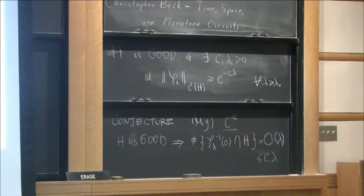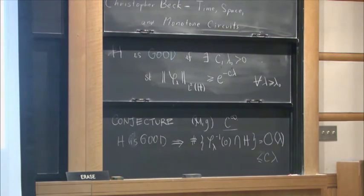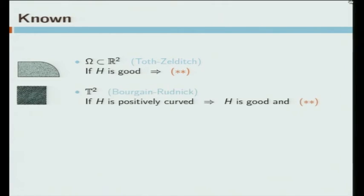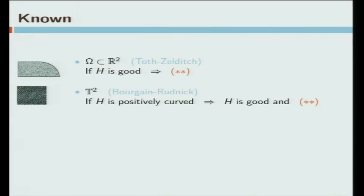I'm going to tell you what's known. Toth and Zelditch, who introduced the concept of a curve being good, were working on regions in the plane. In the plane, they were able to show that if the curve h is good, then you get this O of lambda bound. On the torus, Bourgain and Rudnick in 2010 proved that if you choose your starting curve h to have strictly positive curvature, then the curve h is going to be good and also this O of lambda bound is going to be satisfied. So these are two flat examples.